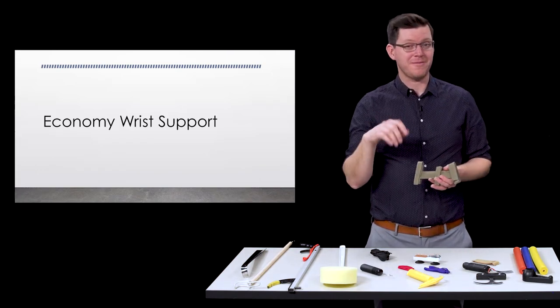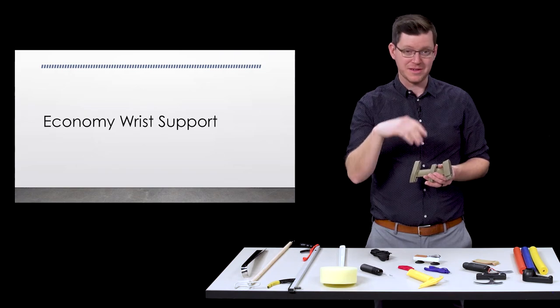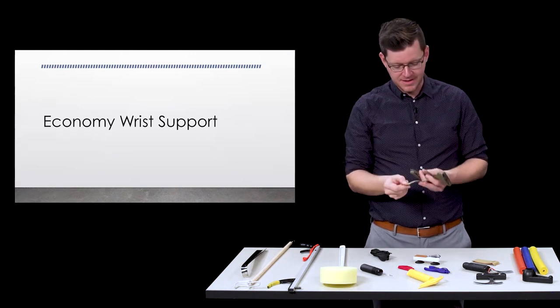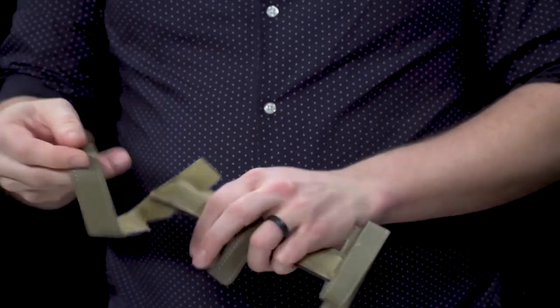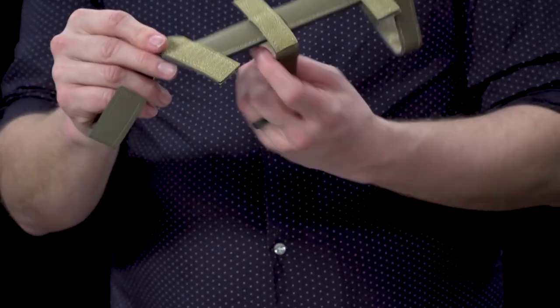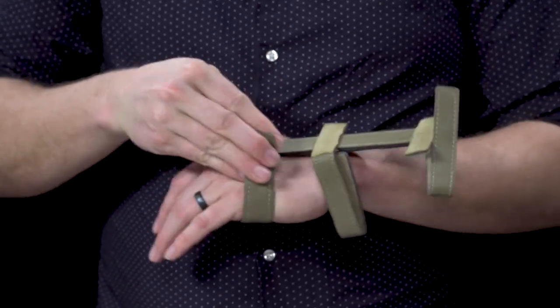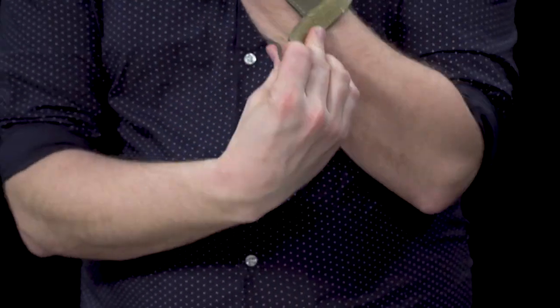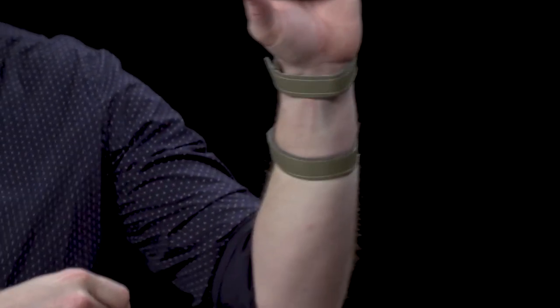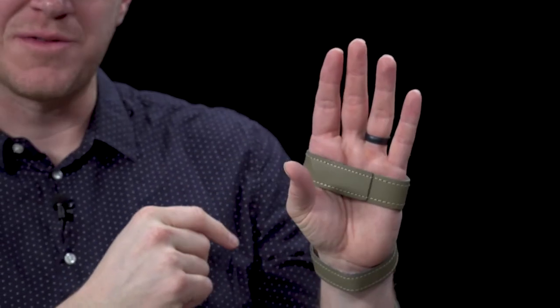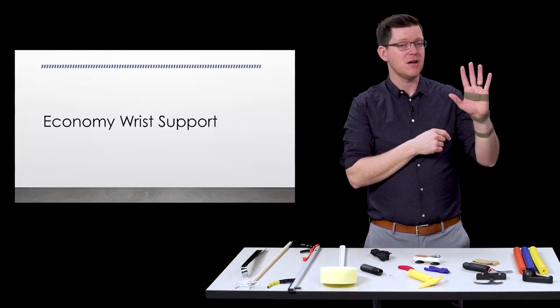One of my favorite tools for people who have some weak wrist, especially in the wrist extension which is pretty common, are using these economy wrist supports. So what we do is we put the bar over the top of our hand and put it on like so, and then we can adjust the spine here to be the angle that we want to keep our wrist.